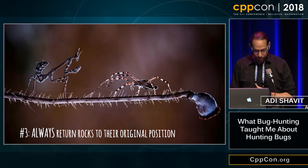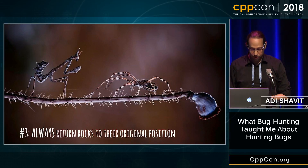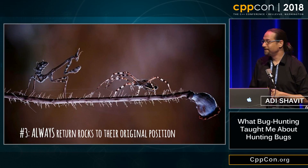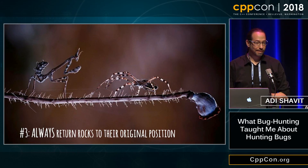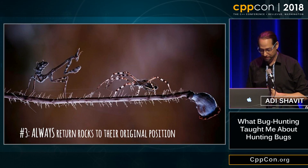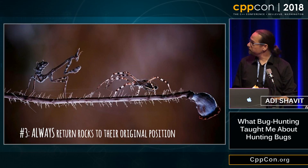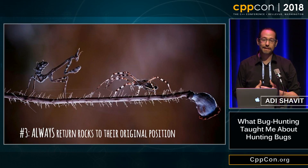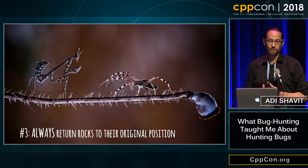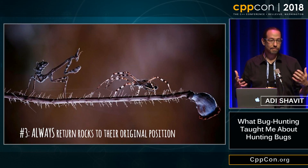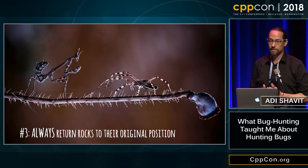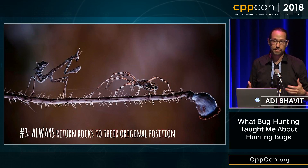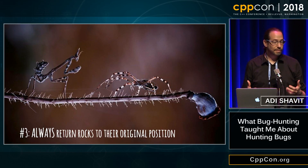Rule number three: we always return the rock to its original position, because bugs are people too, right? We came, we disturbed their home, and we've got to leave them alone when we're done. The bugs we do fix — we want to at least clean up after ourselves. Leave the code in a better condition, leave the system in a better condition than it was before. That means add or update unit tests, update your documentation, and of course refactor your code so that it's future-proof.